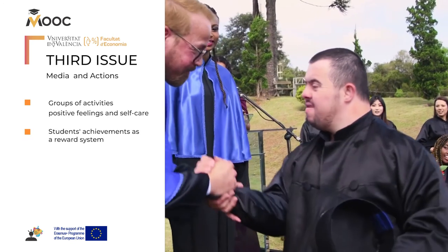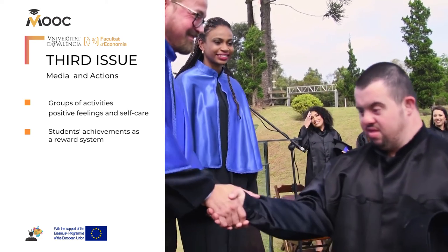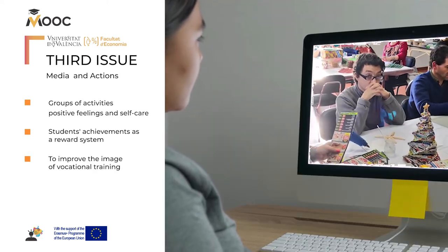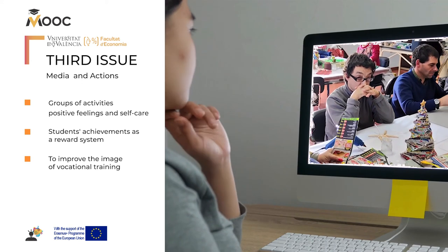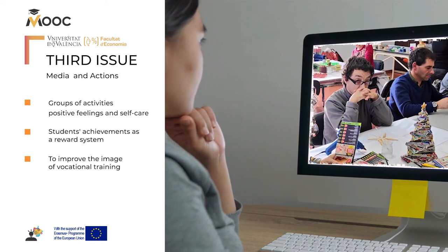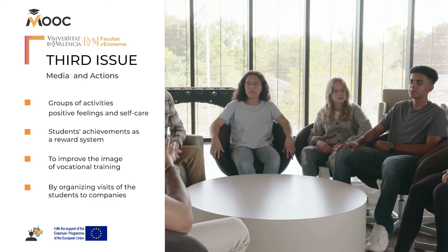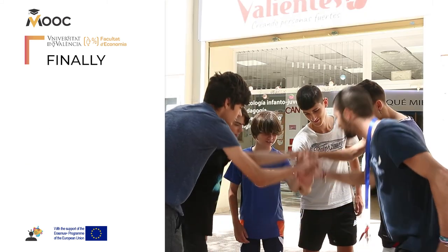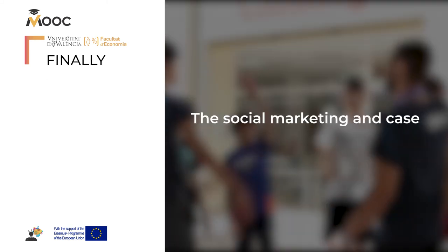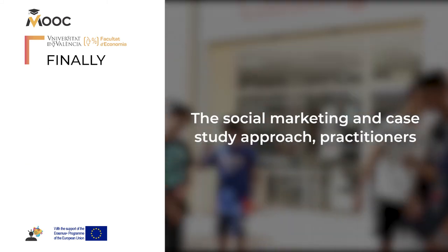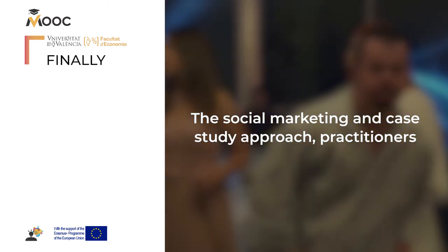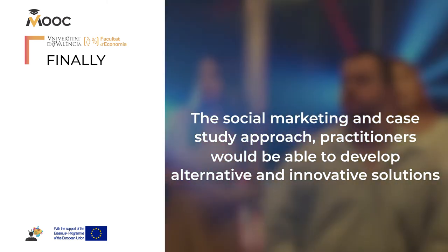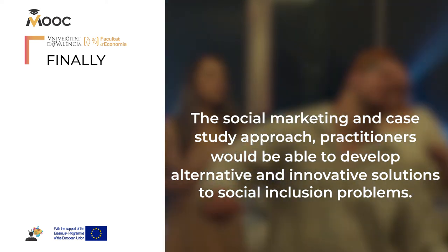Actions include: Ripple activities focusing on positive feelings and self-care to reinforce motivation; a student achievement reward system, giving a diploma or a medal; recording a short film to improve the image of vocational training to the community; and organizing visits of students to companies. In sum, through the social marketing and case study approach, practitioners would be able to develop alternative and innovative solutions to social inclusion problems.